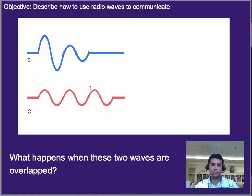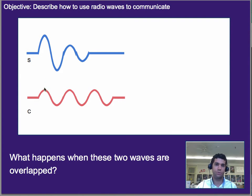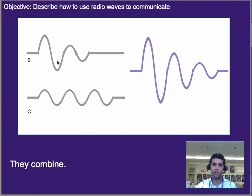Let's also think about, given the idea of superposition, what happens when these two waves are overlapped? Go ahead and pause and think about it. So we're going to call this an S wave and this the C wave. If you overlap them — meaning they both arrive in the same spot at the same time — their displacements just add on to each other. Here it looks like all of the crests match up with crests, all the troughs match up with troughs, and so it will just result in a bigger wave.